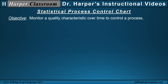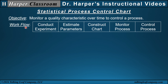The objective of the statistical process control chart is to monitor a quality characteristic over time to control a process. The workflow is: conduct an experiment to estimate the parameters, construct the chart, and use the chart to monitor and control the process. But this video will only estimate parameters and construct the chart.